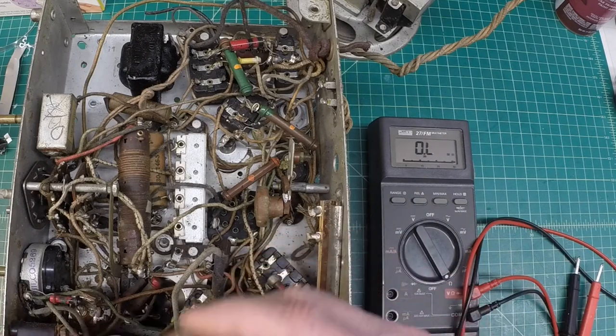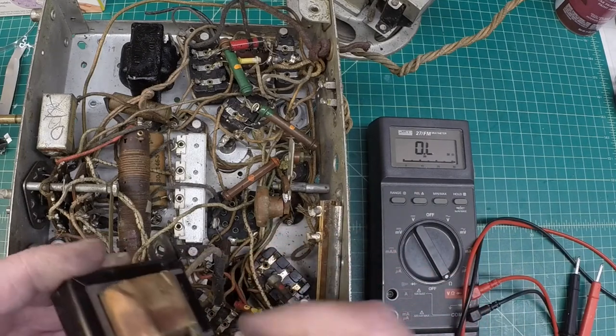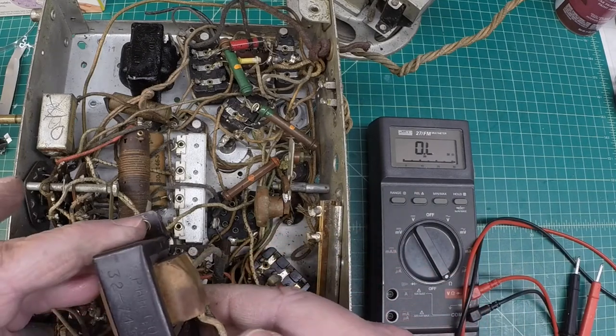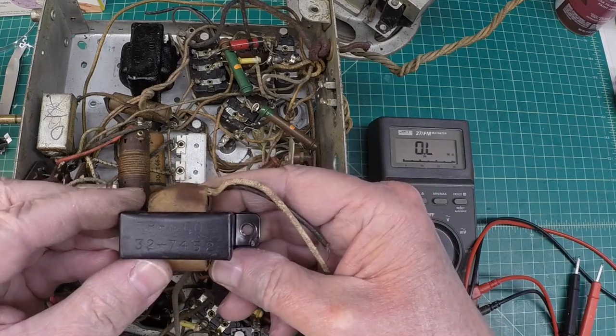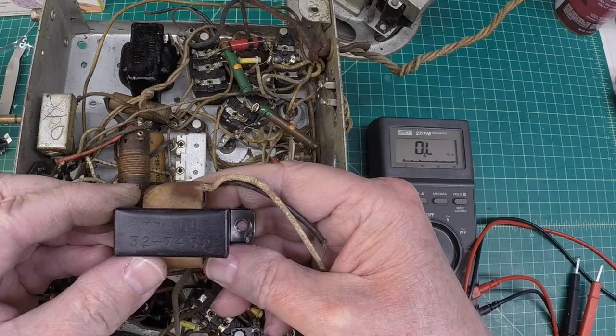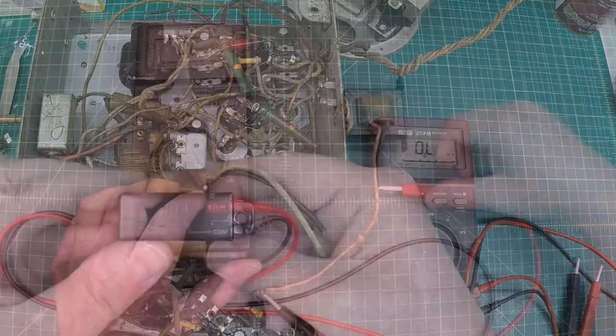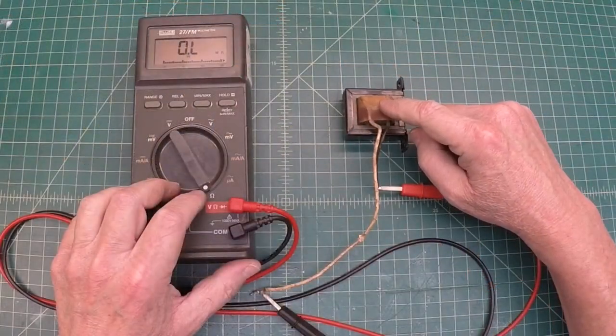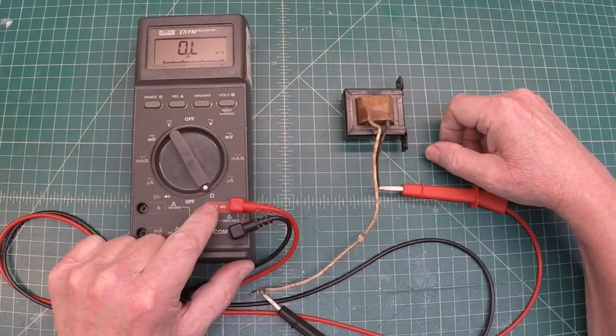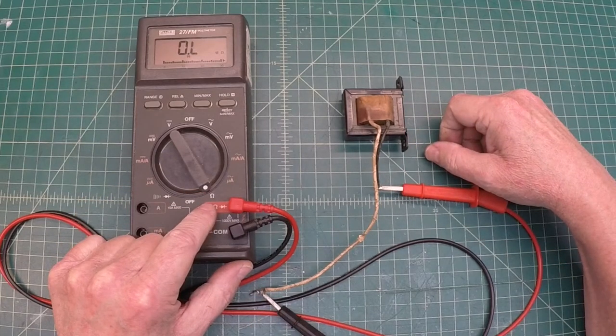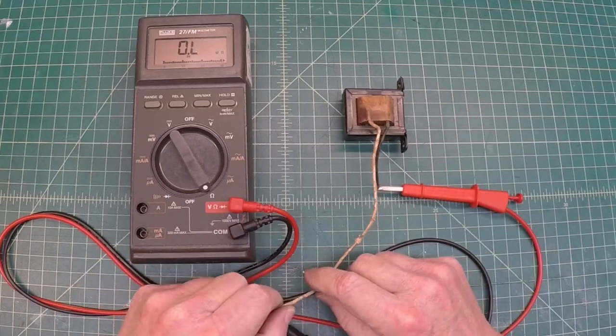Let me get this off of the bench here and let's cut this thing open and see if we can find anything here on this fuel code 32-7452 choke. I've got the choke hooked up here to the meter and we'll be looking at DC resistance. You can tell again it's open.